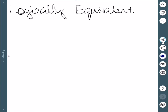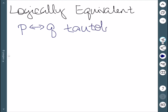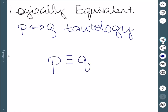For something to be logically equivalent, P if and only if Q needs to be a tautology. We denote this as P is equivalent to Q. We'll do some examples to show how to do it.